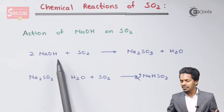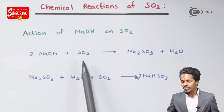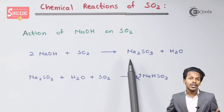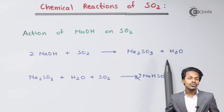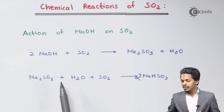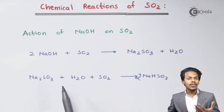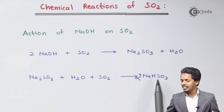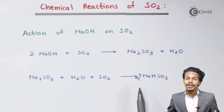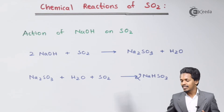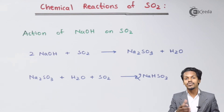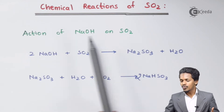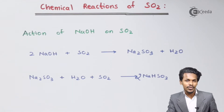If 2 moles of NaOH is reacted with SO2 (sulfur dioxide), there will be production of Na2SO3, that is sodium sulfite, and H2O as a byproduct. When Na2SO3 is further reacted with SO2, we form NaHSO3, known as sodium bisulfite or sodium hydrogen sulfite. This completes the reaction of SO2 on NaOH.